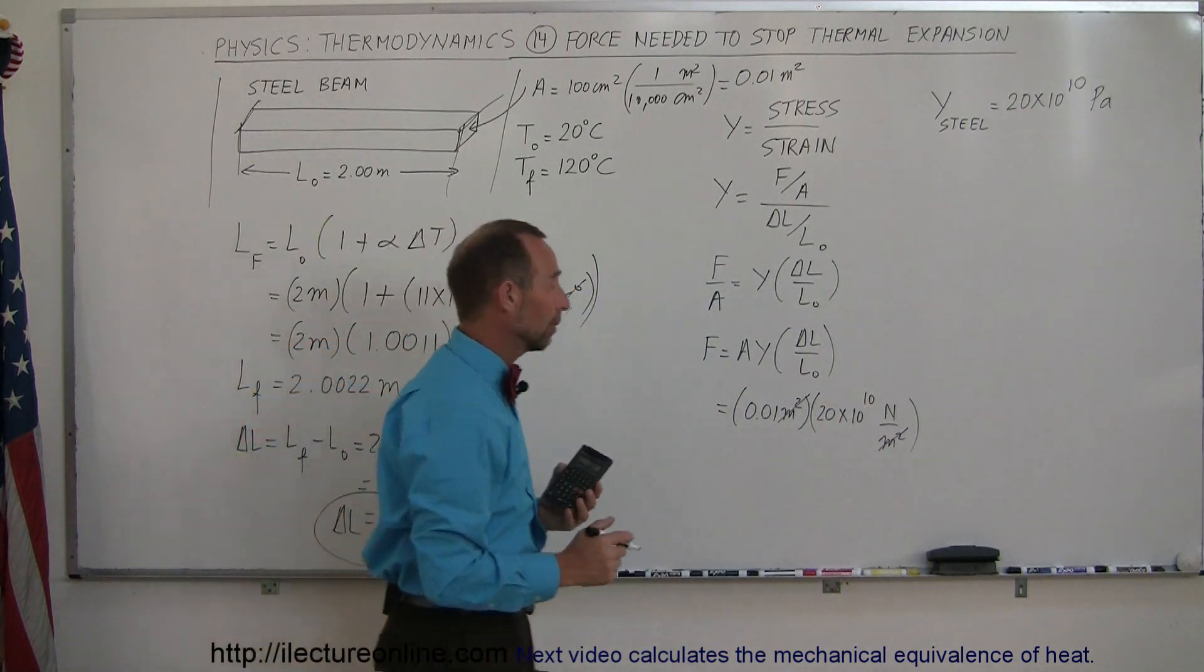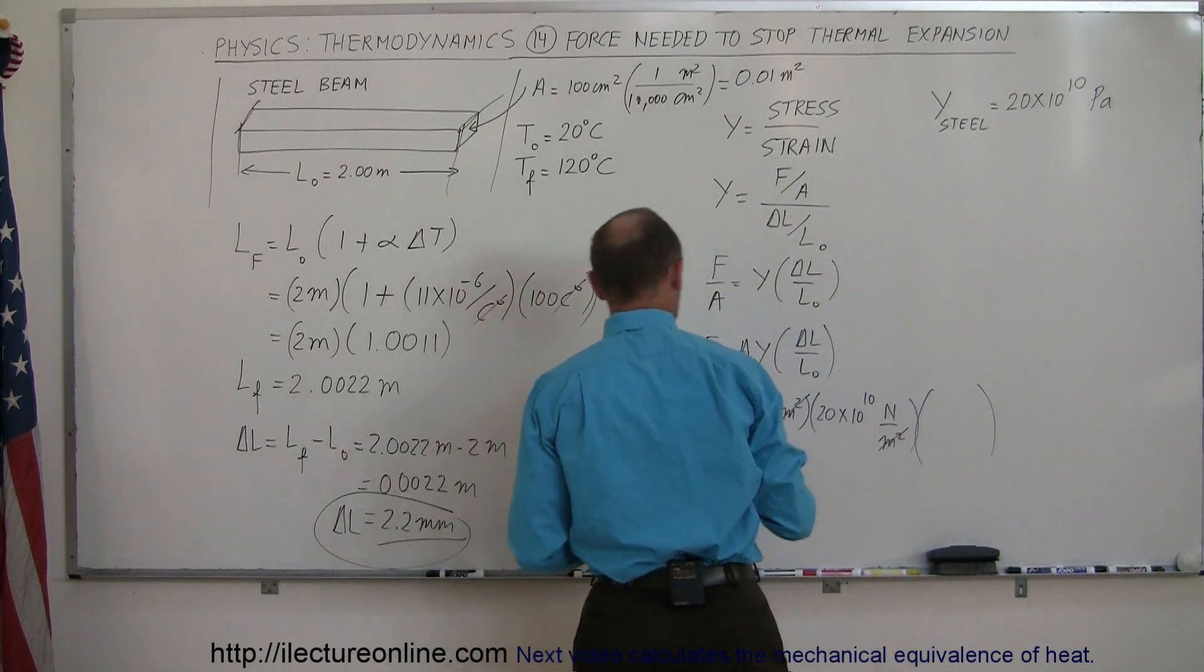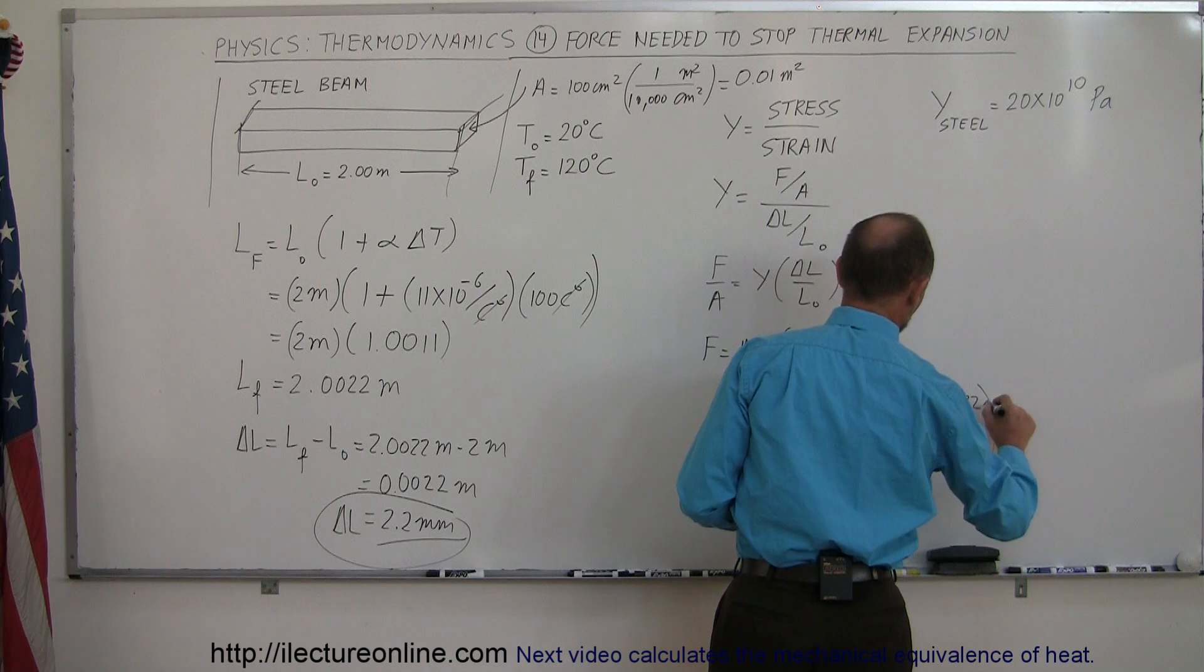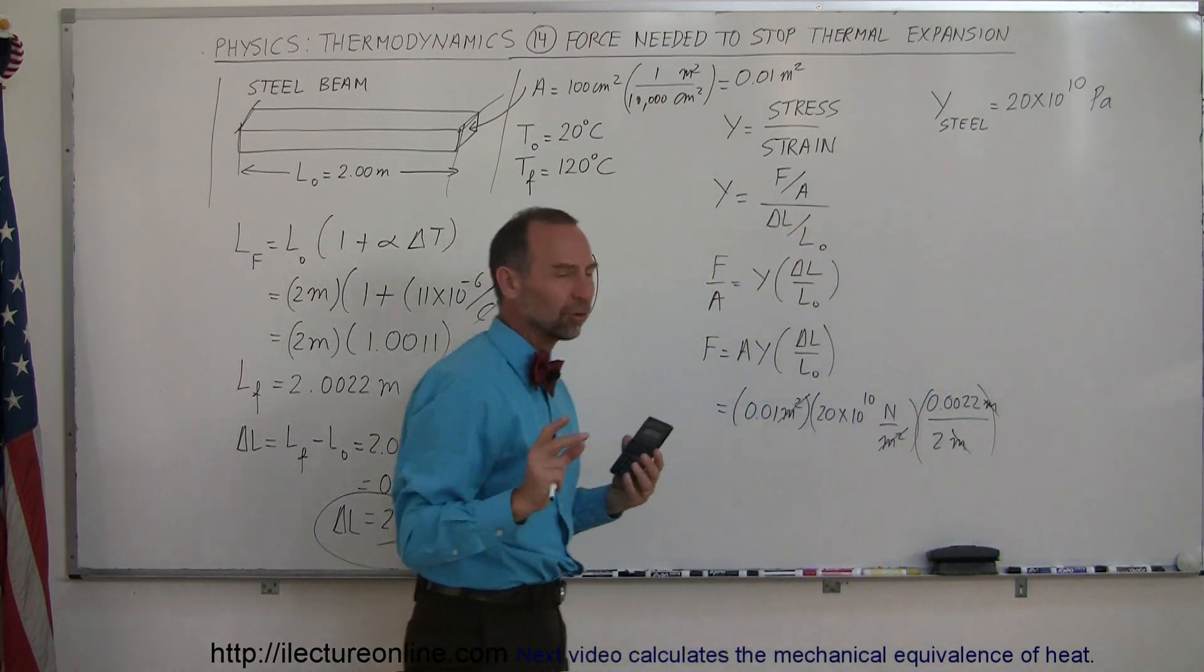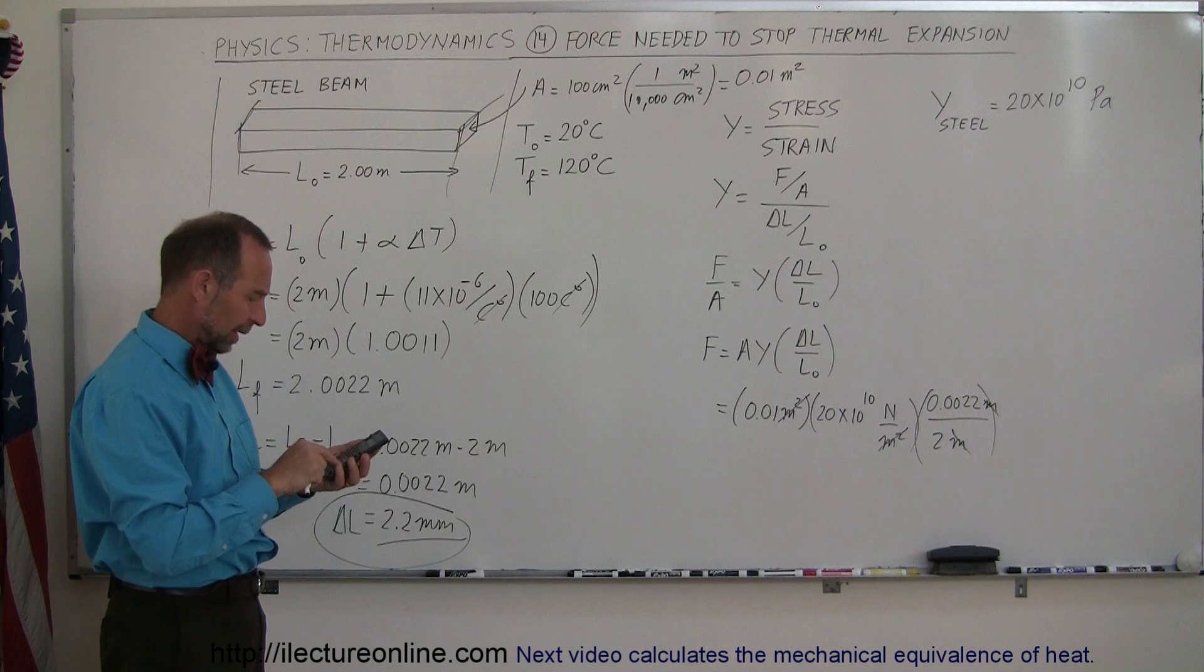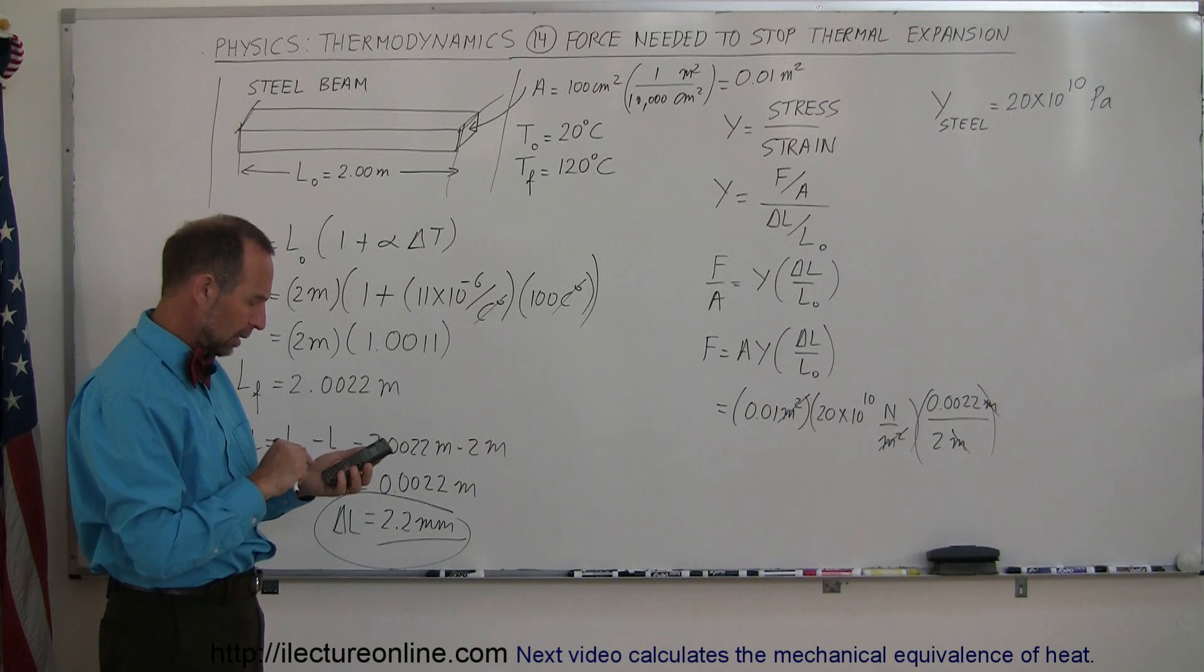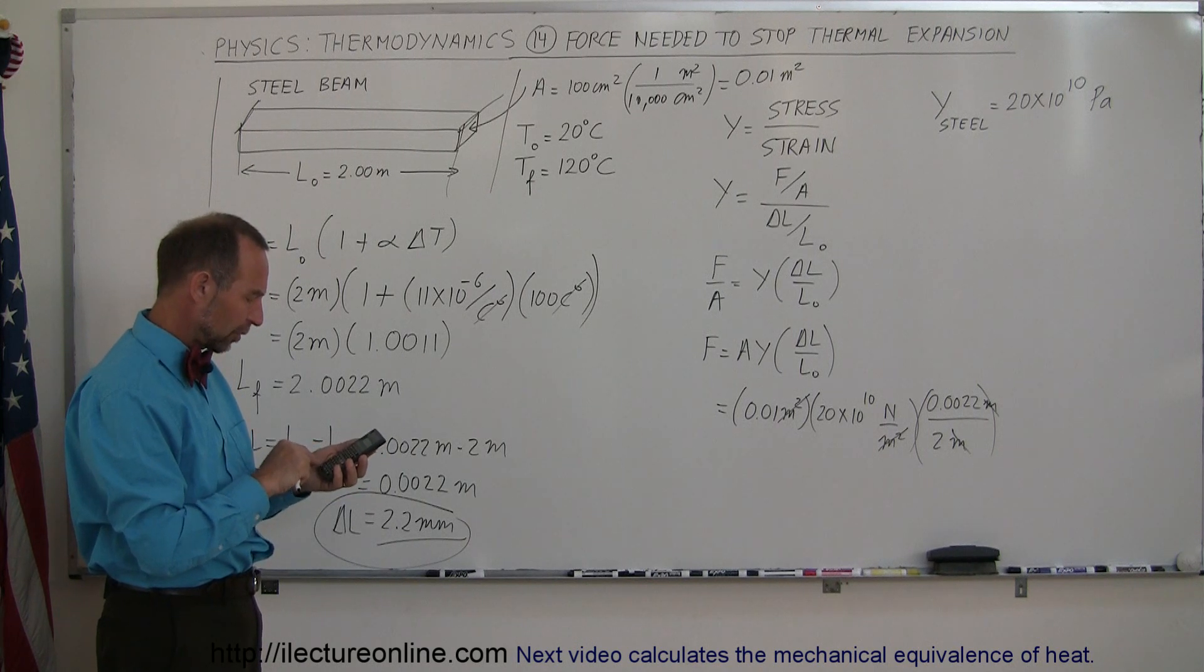Then the final portion, which is delta L over L. Delta L would be 0.0022 meters divided by the original length of 2 meters. Meters cancels out, so you're just left with newtons. Using that in the equation, divide by 2 and multiply times 20E10, then multiply times 0.01.